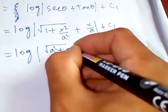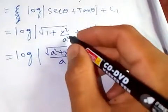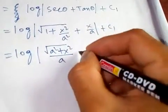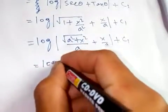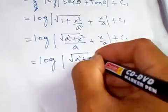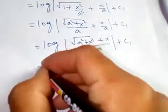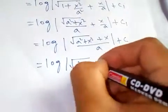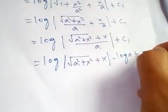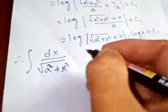Now let's simplify. We can write the square root of one plus x squared over a squared as square root of a squared plus x squared over a squared, which equals square root of a squared plus x squared over a, since the square root of a squared is a. Both terms have the same denominator a, so we get log of square root of a squared plus x squared plus x over a, plus C1. Using the properties of logarithm, log of a fraction means subtracting, so log of square root of a squared plus x squared plus x, minus log of a, plus C1.